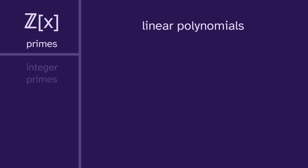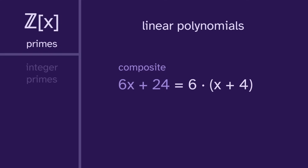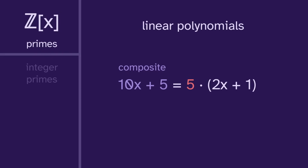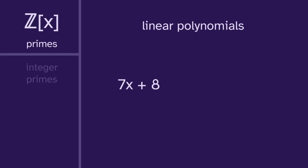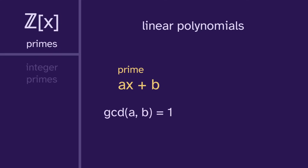Now let's move on to the linear polynomials. This linear polynomial is composite because it has a factorization, and this one is also composite. Notice that this factorization involves a constant and another linear polynomial — this is the only way to factor a linear polynomial. This factorization works because the constant 6 divides both 6 and 24, and the other worked because 5 divides 10 and 5. But what about this polynomial? Nothing divides 7 and 8 — their greatest common divisor is 1. So the only way to factor is 1 times itself, meaning that it's prime.